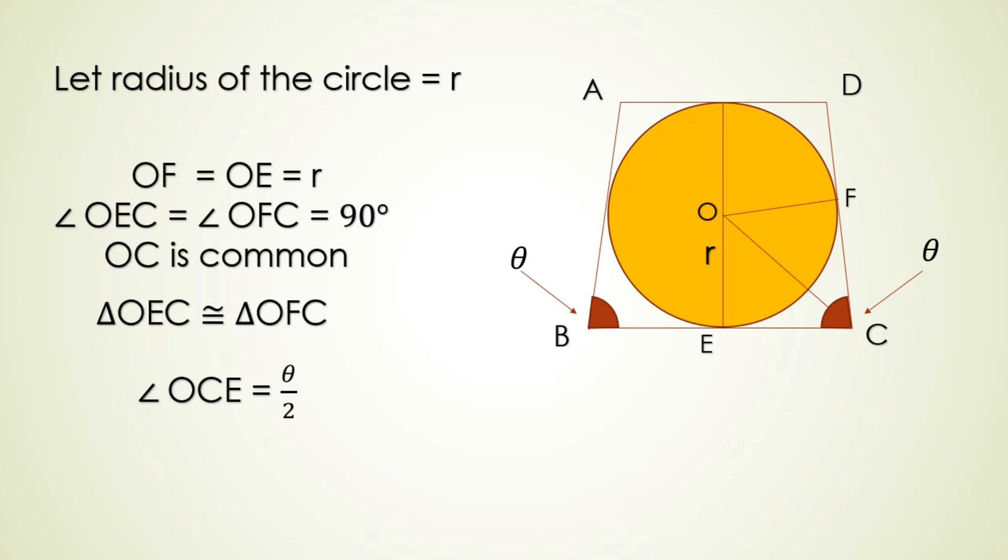Now applying trigonometry in the triangle OCE we can get EC is equal to r cot theta by 2.